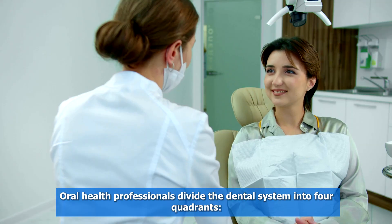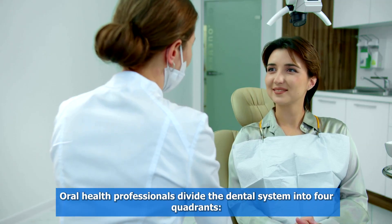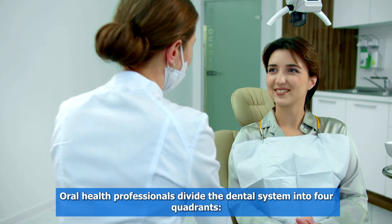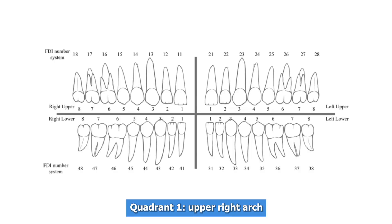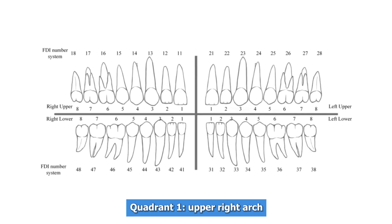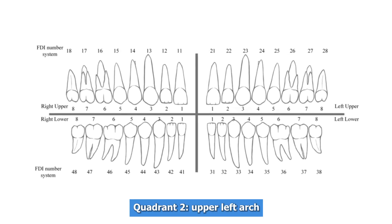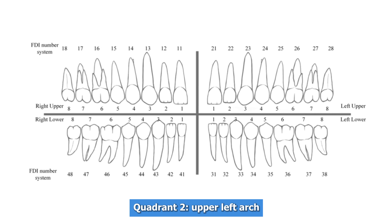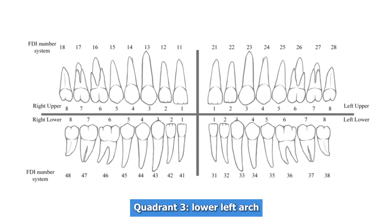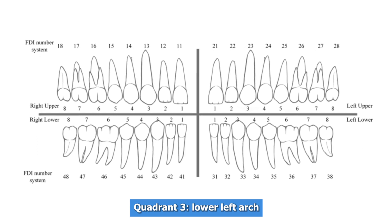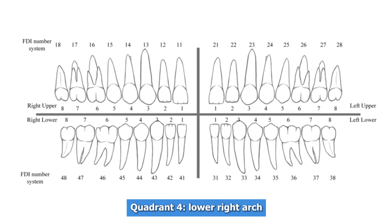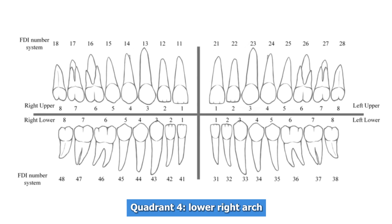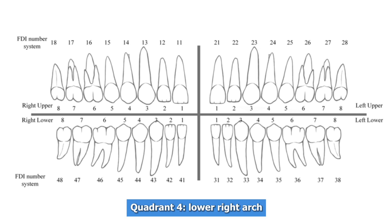Oral health professionals divide the dental system into four quadrants: Quadrant 1 is the upper right arch, Quadrant 2 is the upper left arch, Quadrant 3 is the lower left arch, and Quadrant 4 is the lower right arch.